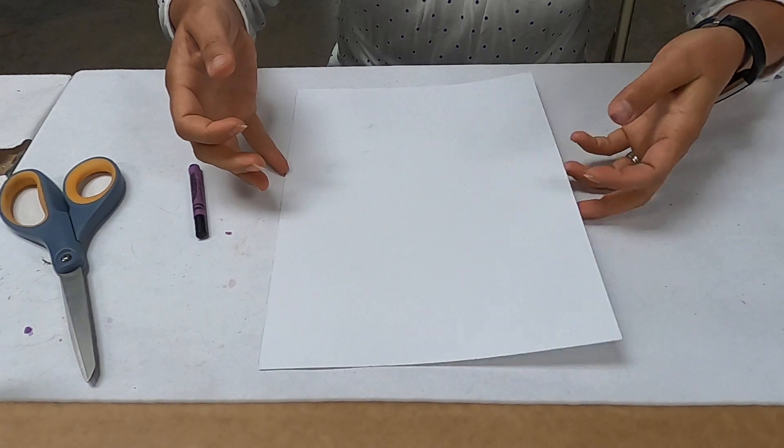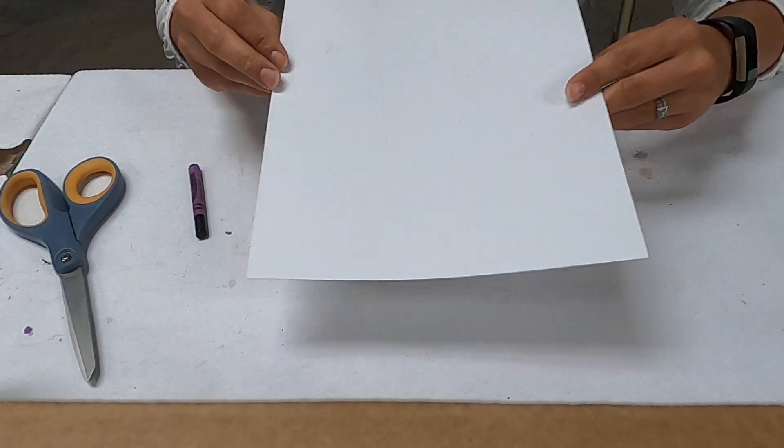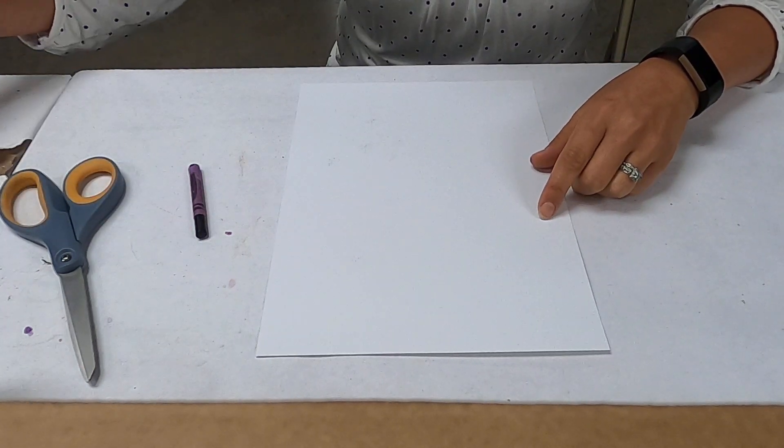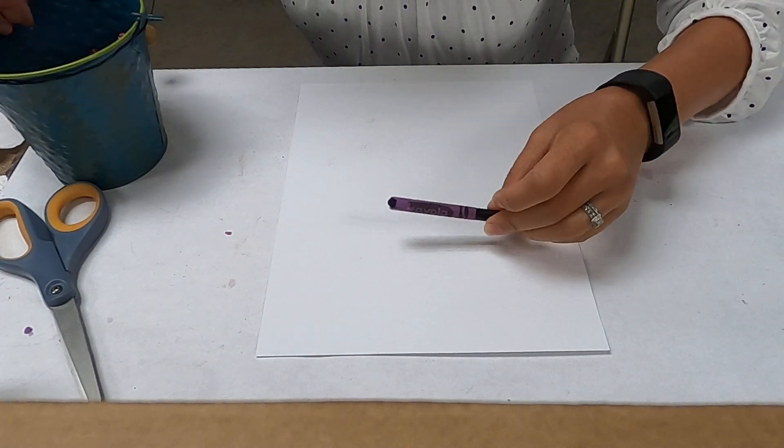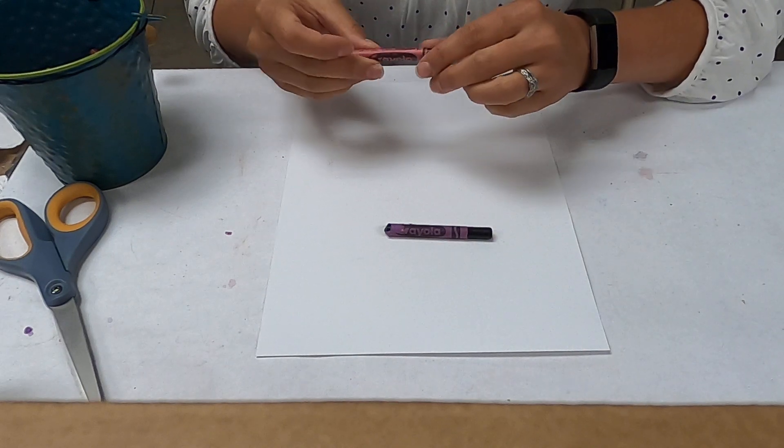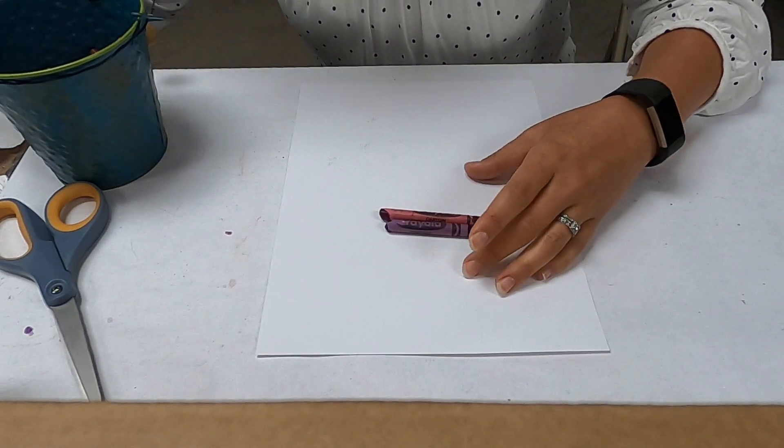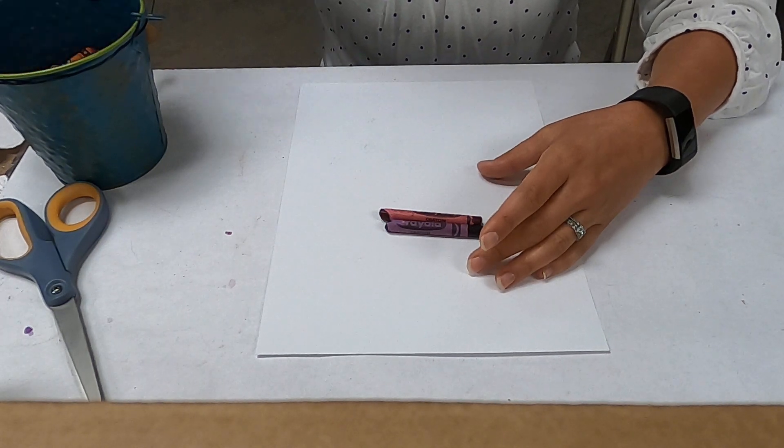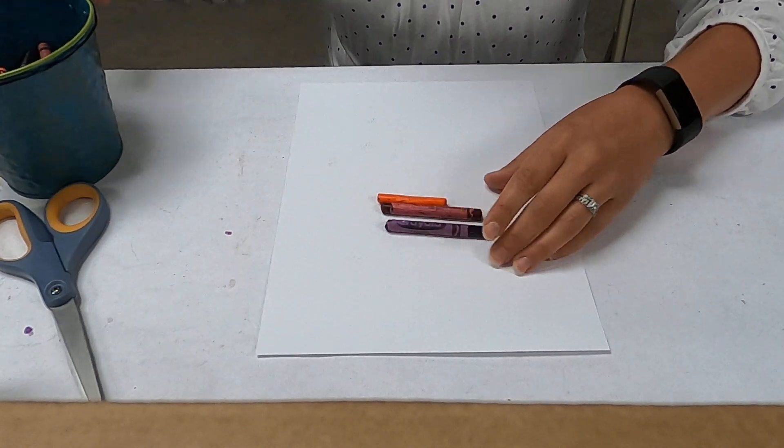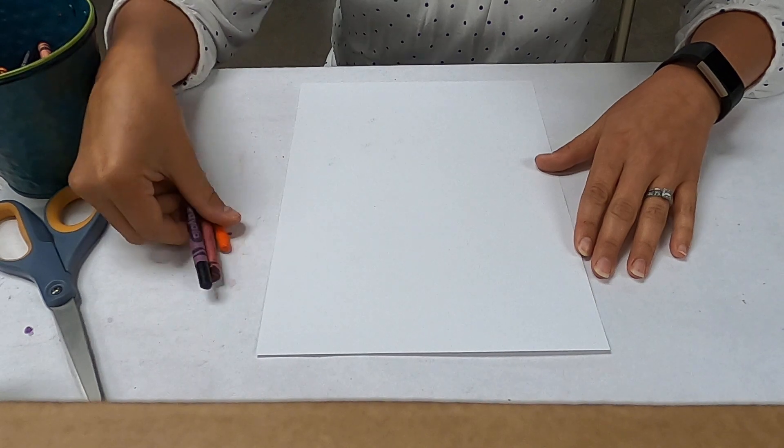So what you're going to need is a heavy piece of paper. I chose some white cardstock and you're going to need some crayons. You can use any color crayons you want. I'm going to use purple and a reddish crayon and maybe an orange crayon. You can choose however many colors you want.